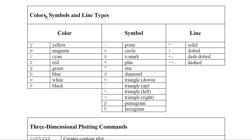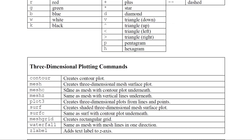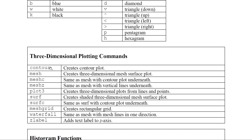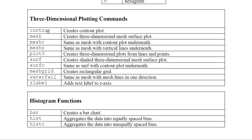For plotting you specify color, symbol, and line type using single-letter codes. For three-dimensional plotting there are commands including contour, mesh, plot3, surf, surfc, meshgrid, waterfall, and zlabel. Most of these can be practiced with the MATLAB web browser, though some commands may not be supported there.